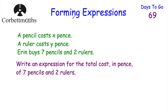Our next question: a pencil costs X pence, a ruler costs Y pence, and Aaron buys 7 pencils and 2 rulers. Write an expression for the total cost in pence. Feel free to press pause and try this yourself. Each pencil costs X pence and he buys 7 of them - if it costs 10p you do 7 times 10, if it costs 15p you do 7 times 15. So we're going to do 7 multiplied by X.